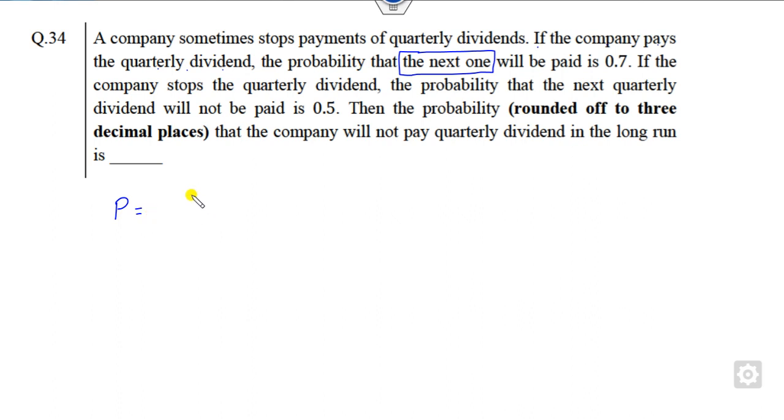How you can write the transition probability matrix? If you see, if the company pays, it means this one is the pay. And the other option will be, if the company stops the quarterly dividend, the probability that next quarter will not be paid.